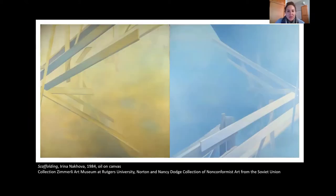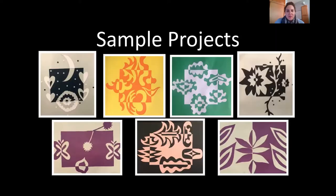These are some examples of what you can do with the project we're making today. You can keep it really simple with just squares, triangles, and squiggles. Yasmin is going to start off with simple shapes. But when we work on a second one, or if you want to make more on your own, you can get all the squiggles, curvy lines, angular lines — whatever shapes you can think of. There are a lot of possibilities.